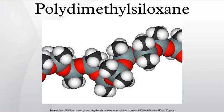Branching and capping: hydrolysis of Si(CH3)2Cl2 generates a polymer that is terminated with two silanol groups (Si-OH). These reactive centers are typically capped by reaction with trimethylsilyl chloride, Si(CH3)3Cl.